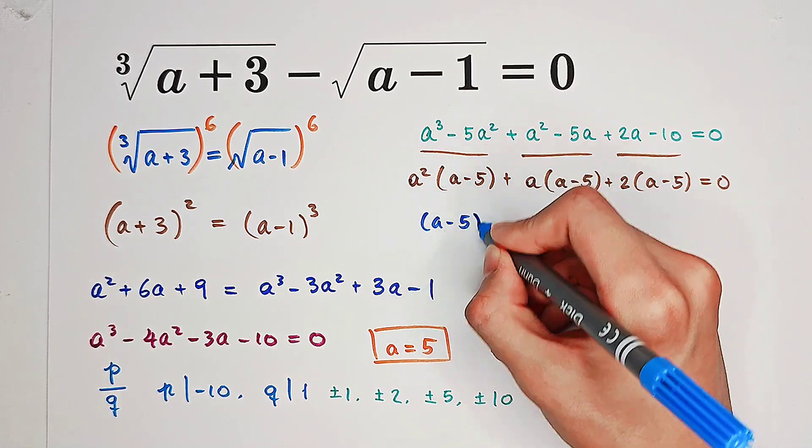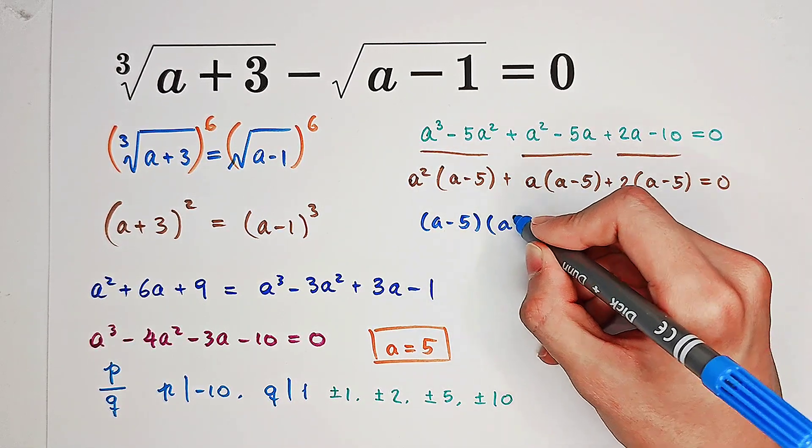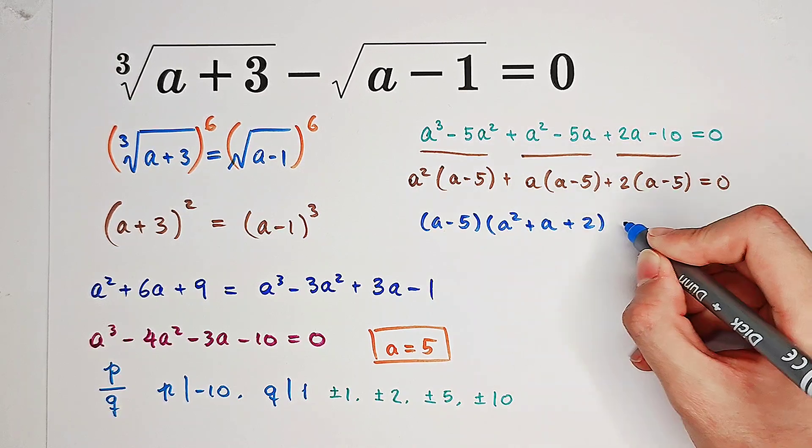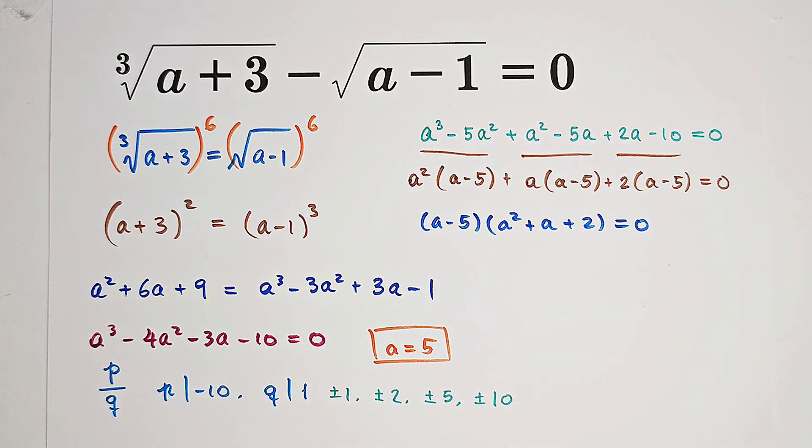So it is a minus 5 times a squared plus a plus 2 equals 0.